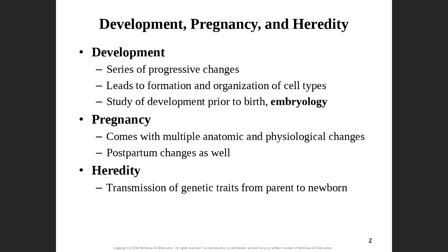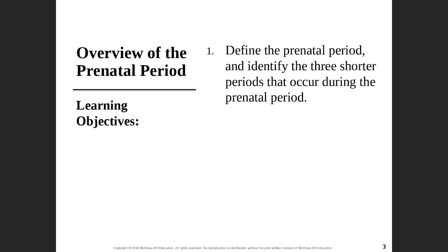We're going to be discussing a couple of different topics: development, pregnancy, and hereditary. If we are going to be discussing development, we are going to be discussing embryology — the study of development prior to birth. We're actually going to see how once the oocyte has been fertilized by the spermatogonia, we're going to discuss the development of that union and what happens. We'll also discuss what happens during pregnancy, the changes that occur in mom, both anatomically and physiologically, and then we're going to finish up and discuss genetic traits — who gives what to whom, what mom gave to the newborn and what dad gave to the newborn.